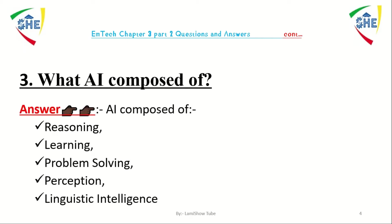Question number three: what is artificial intelligence composed of? The components of artificial intelligence are learning, reasoning, problem solving, perception, and linguistic intelligence.